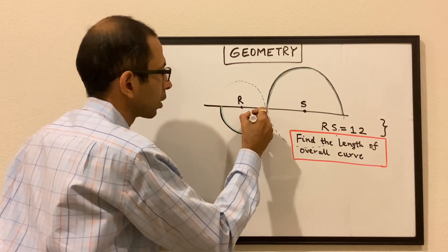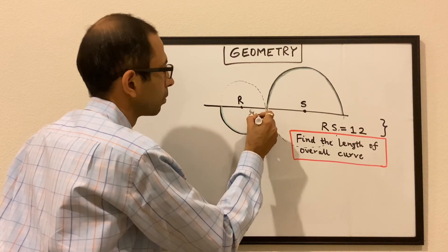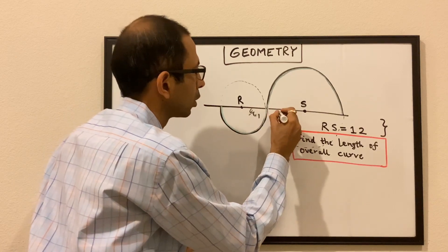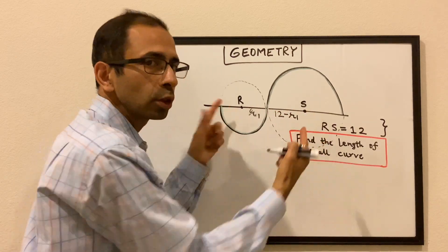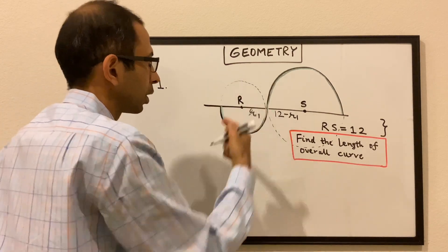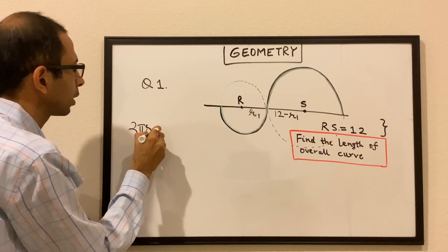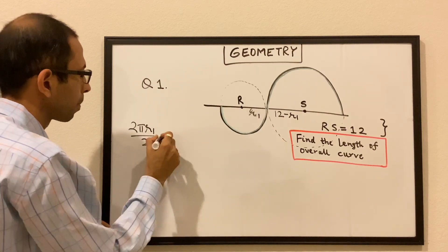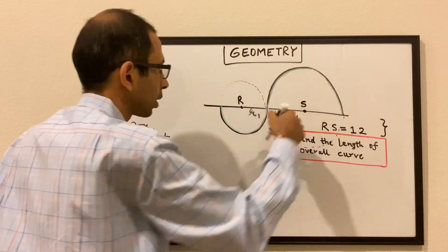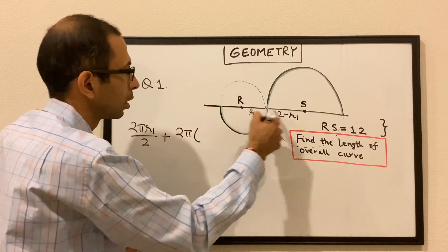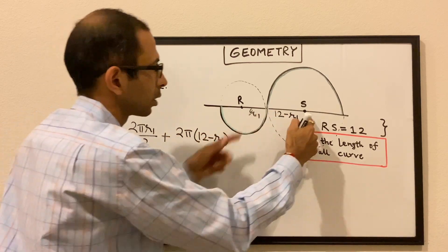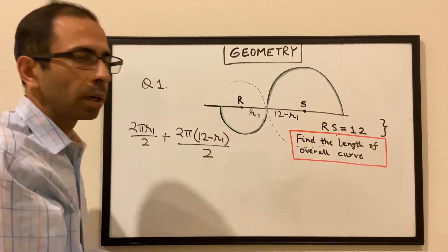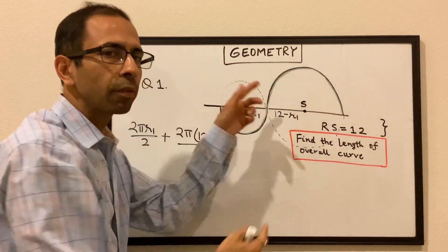Let's say that the radius of this smaller circle is R1. If this radius is R1, then this would be 12 minus R1, because the overall length is 12. So let's do the circumference for this one: it will be 2πR1 divided by 2, because we are talking about only half the portion of the overall circumference. Plus, the overall circumference would be 2π(12 minus R1), because the radius of the bigger circle is 12 minus R1 — so 2π times the radius, divided by 2, because we are only interested in the half of the overall circumference.